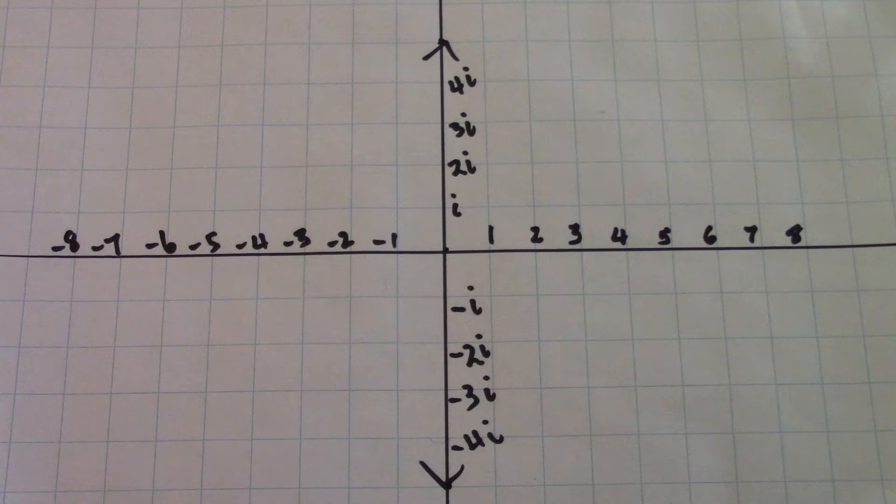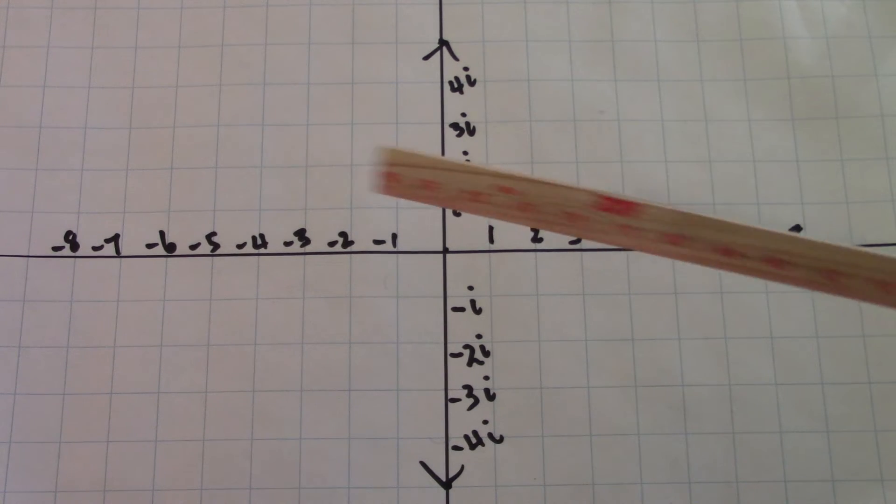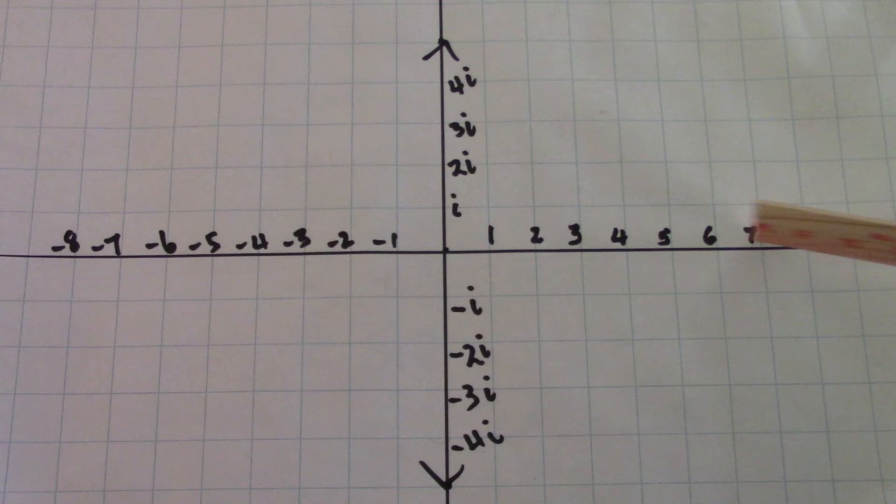So we really have a geometrical representation of numbers. We have a line with numbers on it, and we call these numbers real numbers. And we call it a real number line.